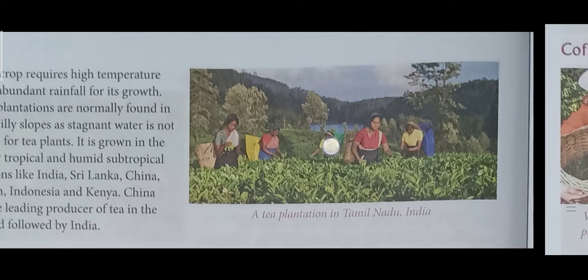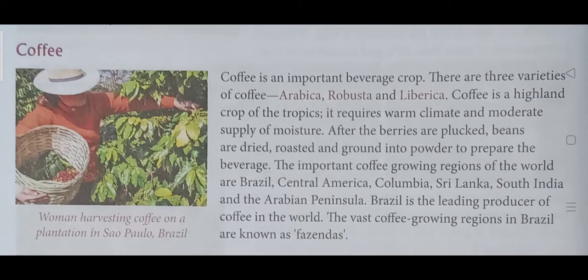Coffee is an important beverage crop too. There are three varieties of coffee: Arabica, Robusta, and Liberica. Coffee is a highland crop of the tropics; it requires a warm climate and a moderate supply of moisture. After the berries are plucked, the beans are dried, roasted, and ground into powder to prepare the beverage. The important coffee-growing regions of the world are Brazil, Central America, Colombia, Sri Lanka, South India, and the Arabian Peninsula.